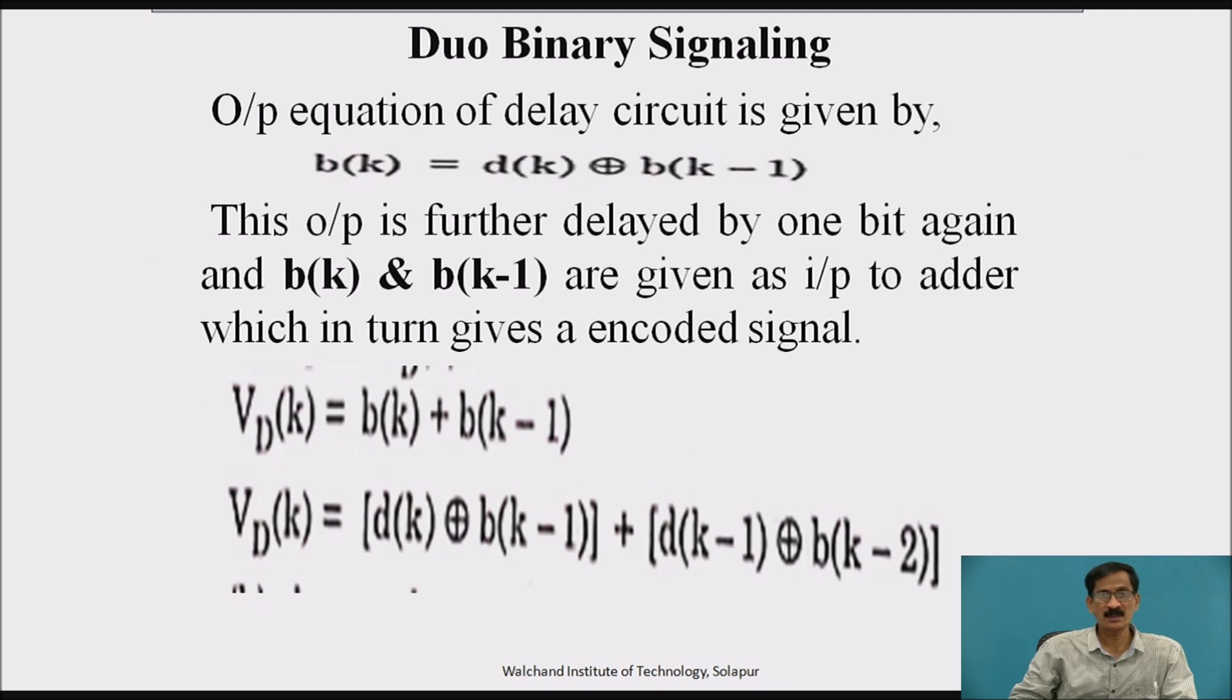Output is fed back through a delay generating circuit which gives the output b k of delays as b k equals d k XOR b k minus 1. This output is further delayed by 1 bit again and b k and b k minus 1 are given as input to adder which intends give an encoded signal as v d k equals b k plus b k minus 1. So, v d k equals d k XOR b k minus 1 plus d k minus 1 XOR b k minus 2.